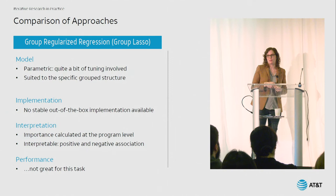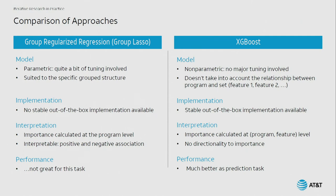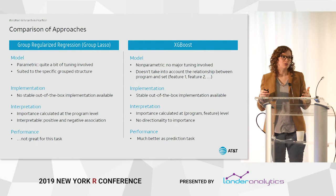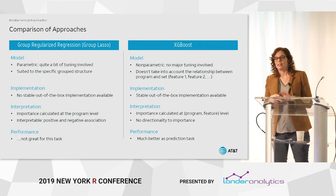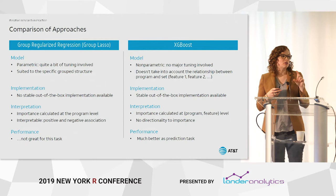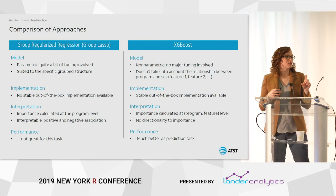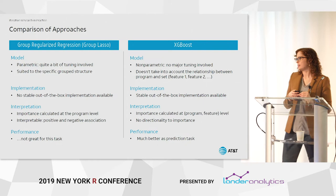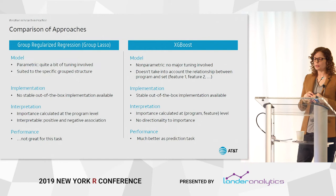We also looked at XGBoost, which has been a contributor to most winners of Kaggle competitions. It's known for model performance and speed, and in our case it handles sparsity very well — important given that not every household watches all 75,000 programs. There is a stable out-of-the-box implementation in R. For interpretation, tree-based methods give a variable importance score, but it was at the program feature level, not the program level, so we had to roll that up. There's no directionality to it, so it's not quite as intuitive, but it performed much better.